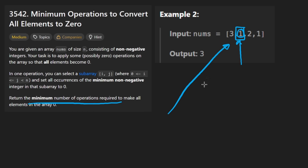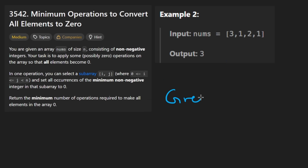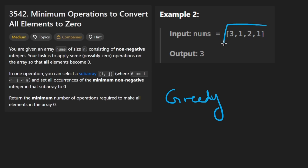Let that thought marinate. The next logical thing to arrive at is: how should we process elements first? Ideally we want to be greedy. Why would I pick a subarray with just a single one, when clearly there are multiple ones? If I pick the entire range, I can get rid of both at the same time. So this leads you to the idea of a greedy solution.